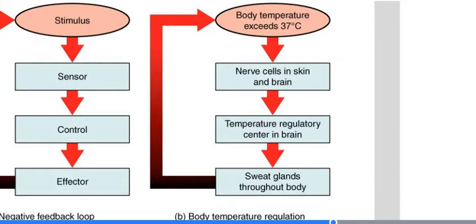they send a signal to a specific temperature regulatory center in the brain, which will respond by causing changes, including the sweat glands will become active throughout the body and sweat will help to cool down the body. When it cools down the body, the stimulus will then get back to its normal set point of 37 degrees, and that'll shut down the loop.